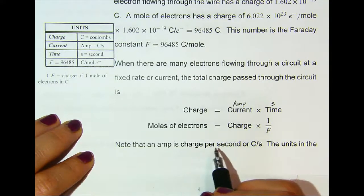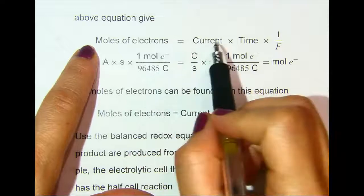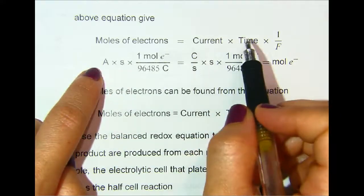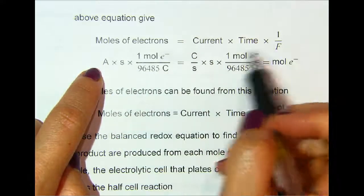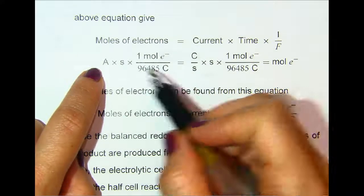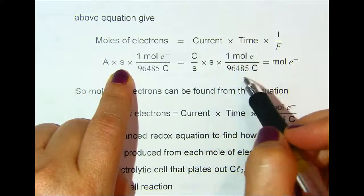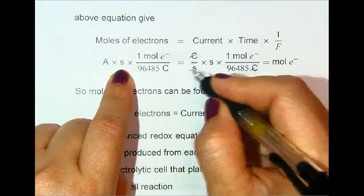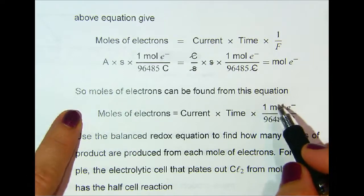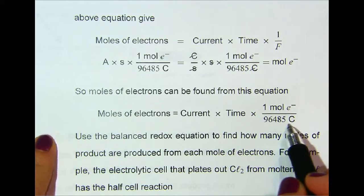Note that an amp is charge per second, or coulombs per second. The units in the equation give: moles of electrons = current × time × (1 / Faraday's constant). Current is in amps, time is in seconds, and 1 over Faraday's constant is 1 mole of electrons per 96,500 coulombs. Amps equals coulombs per second — the coulombs and seconds cancel, leaving moles of electrons. So moles of electrons = current × time × (1 mol e⁻ / 96,500 C).